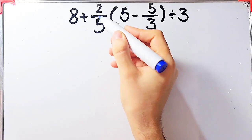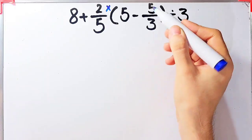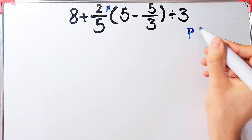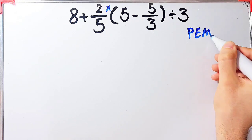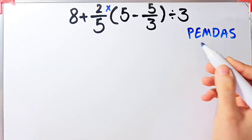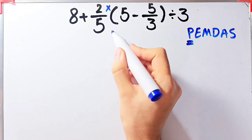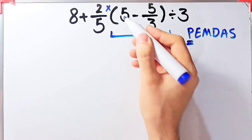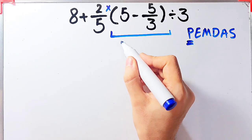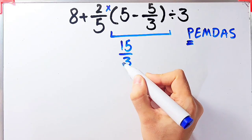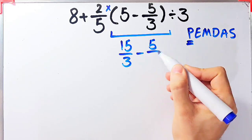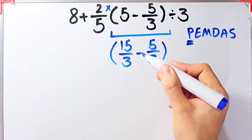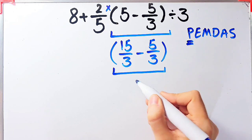The second question is: 8 plus 2 over 5, times open parentheses 5 minus 5 over 3 close parentheses, divided by 3. To solve this question we need to follow the PEMDAS rule. First we simplify the parentheses. Inside the parentheses we have 5 minus 5 over 3. Since the denominator is 3, we can write 5 as 15 over 3. So 15 over 3 minus 5 over 3 equals 10 over 3.